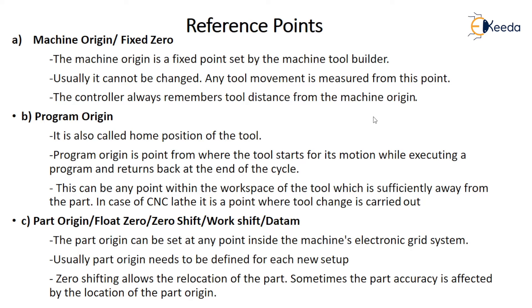Program origin: it is the home position of a tool. Program origin is where the tool is placed at a certain distance according to the position of the workspace. Program origin is the point where the tool starts its motion while executing a program and returns back at the end of the cycle. After completion of the cycle, it will go to that program origin position.